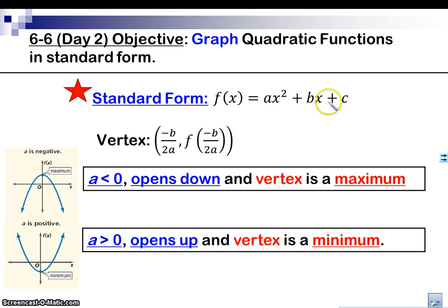So here is a quadratic in standard form, and the vertex is going to be negative b over 2a, and that's going to give our x value, and then we're going to plug that value in for x, and that'll give us our y value, so f of negative b over 2a. We know that if a is negative, then the parabola is going to open down, and we're going to have a maximum on top, and we know if it's positive, we're going to have a minimum on the bottom.